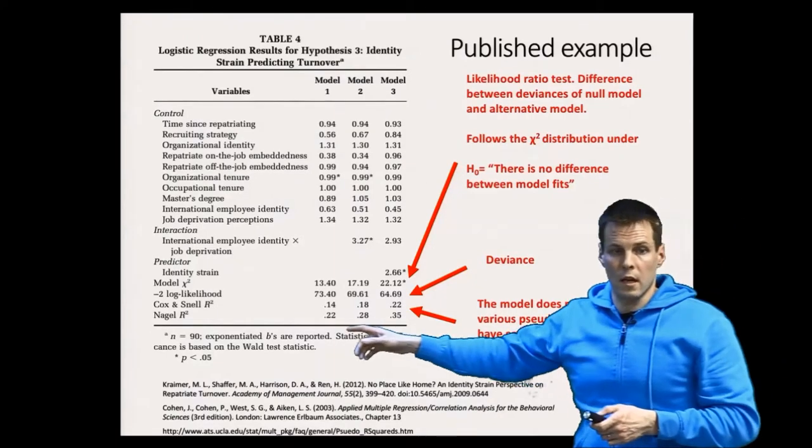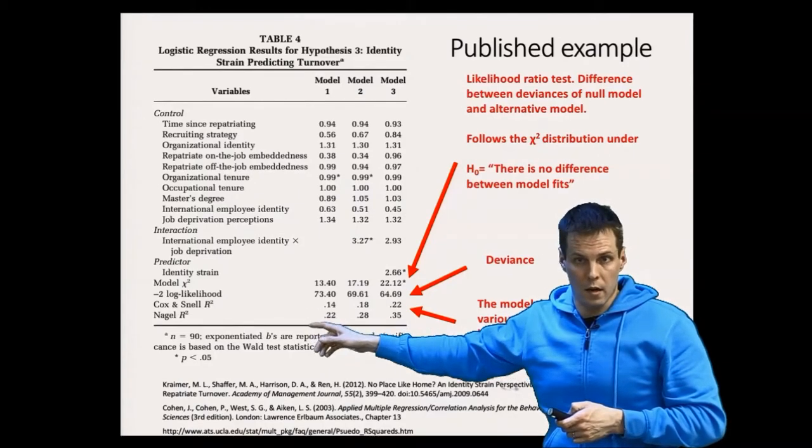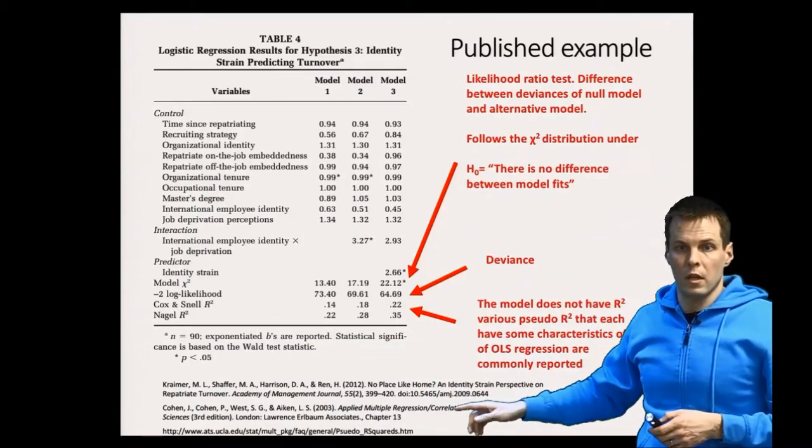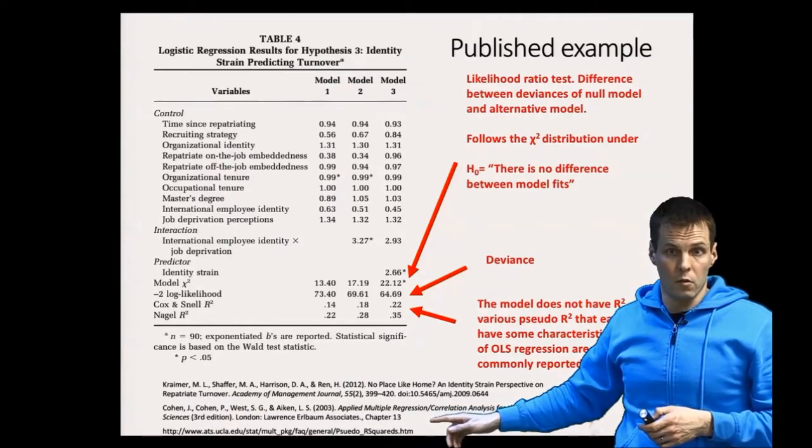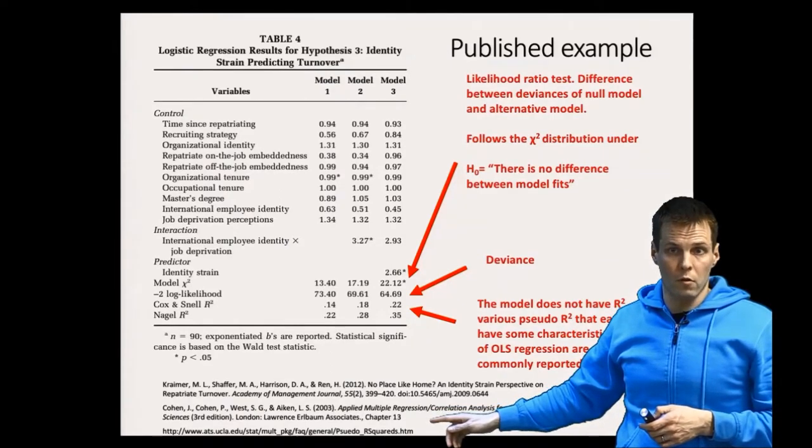Here we have Cox and Snell r-square and the Nagel-Kartier r-square. I don't remember their definitions but here is a link that explains many of the most commonly used pseudo r-squares.